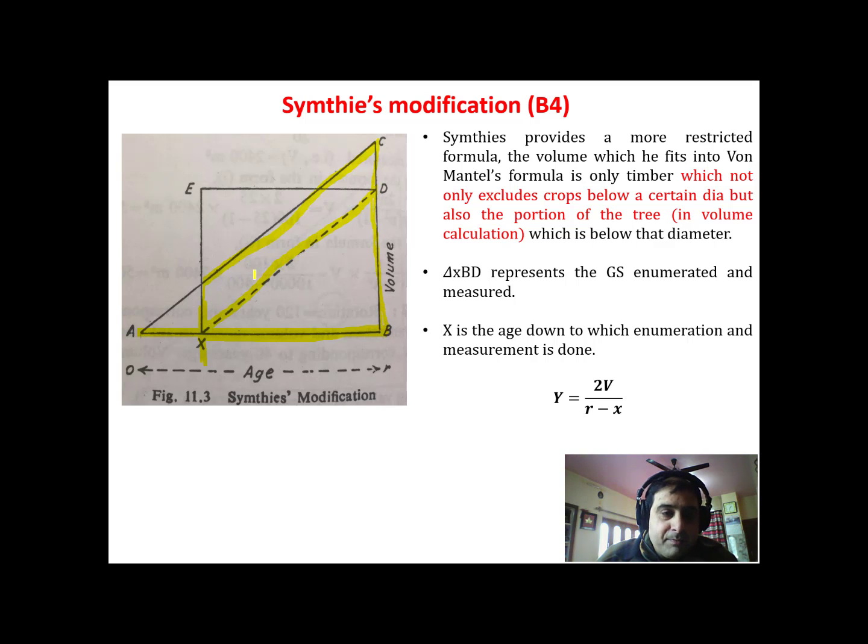So you can see there is, to the original enumerated growing stock, there is a loss of this A, x, d and c to the total growing stock. And to the enumerated growing stock we have a loss of this trapezium. You can say this trapezium, and only this triangle x, b and d is taken into consideration for the estimation of enumerated growing stock.